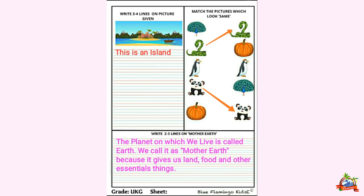There are total 8 planets in the solar system. Our Earth is the third planet from the Sun. And why do we call it Mother Earth? Because it gives us land, food, and other essential things.